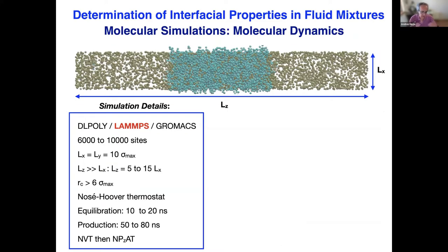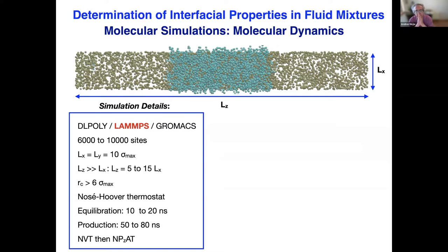This interrelated approach also uses molecular dynamics simulation, typically with three different software suites: DL-POLY, LAMMPS, or GROMACS. In this kind of simulation, we use 600 to 10,000 sites; the box dimensions are 10 times the maximum value of sigma in two dimensions, and Lc is 5 to 15 times the other two dimensions to provide space for the vapor-liquid interface region. To reduce cutoff effects, we use a cutoff of six times sigma, the Nosé-Hoover thermostat, equilibration of 10 to 20 nanoseconds, and production runs of 50 to 80 nanoseconds.